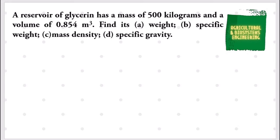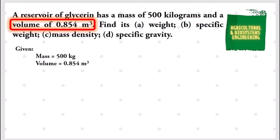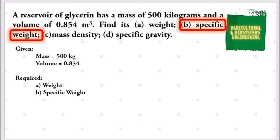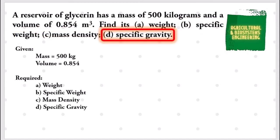Our first step is to determine our given. We have a mass of 500 kilograms and a volume of 0.854 cubic meters. What is required in the problem are: first the weight, followed by specific weight, followed by the mass density, and finally the specific gravity. After determining the given and the required, let us proceed now to our solution.